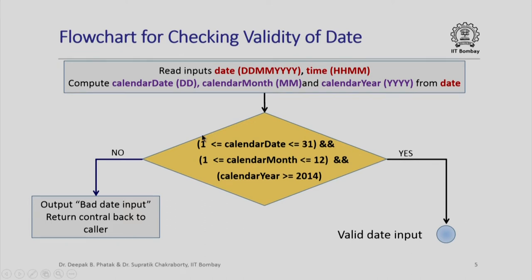If the answer to whether all three conditions are satisfied is yes, then we have a valid date input. Otherwise we do not have a valid date input, so we simply output bad date input and return control back to the caller.